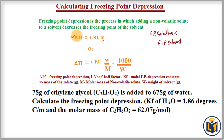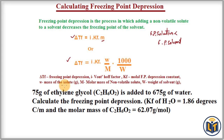This formula can also be written as: ΔTf = i × Kf × (w / M) × (1000 / W), where i is the van't Hoff factor, Kf is the molar freezing point depression constant, w is the mass of solute in grams, M is the molar mass of the non-volatile solute, and W is the mass of solvent in grams.